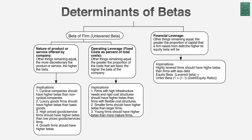That's the first building block for beta — think about what your company does. Second, tell me something about your cost structure. The greater the proportion of your costs that are fixed costs, the higher your beta will be. Why? Because if you have a lot of fixed costs, good times become great and bad times become terrible — everything gets magnified.